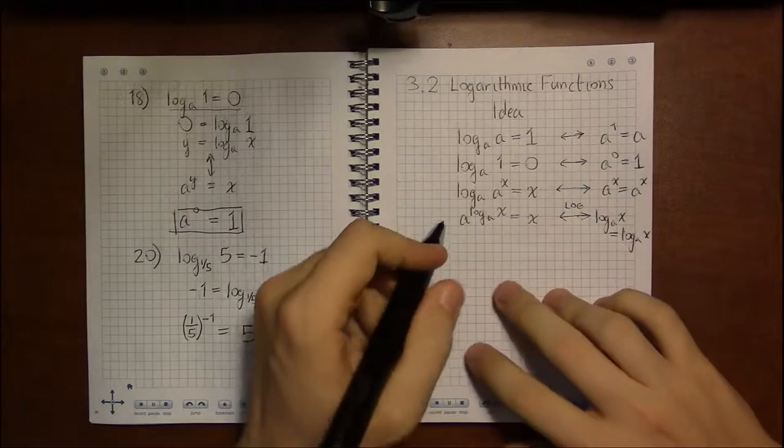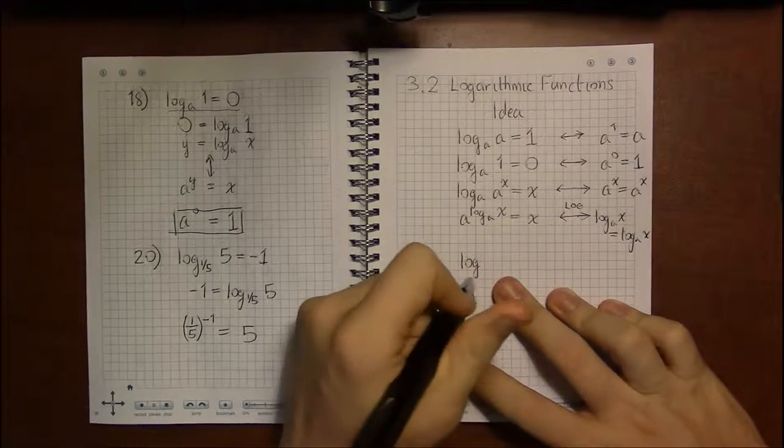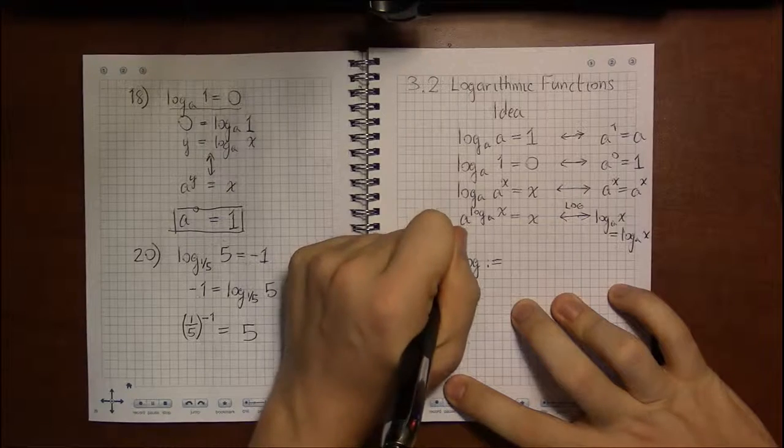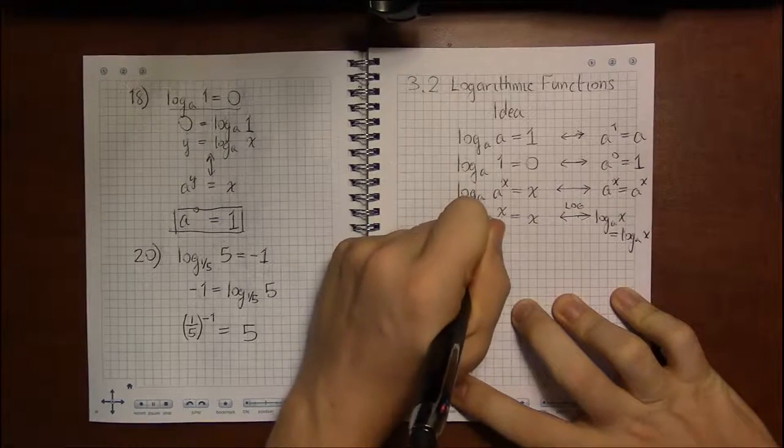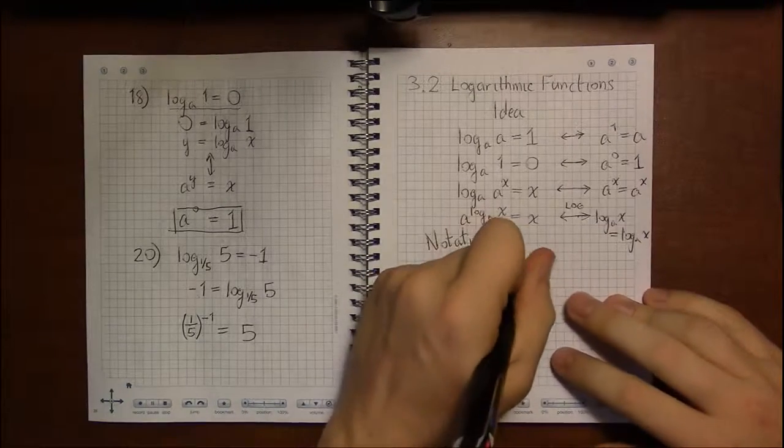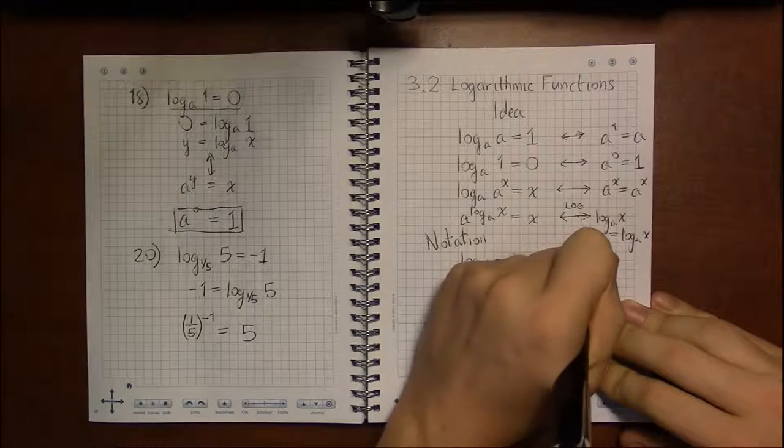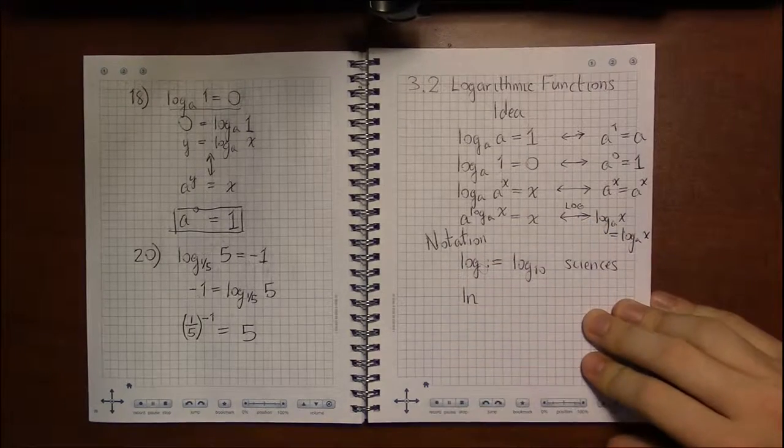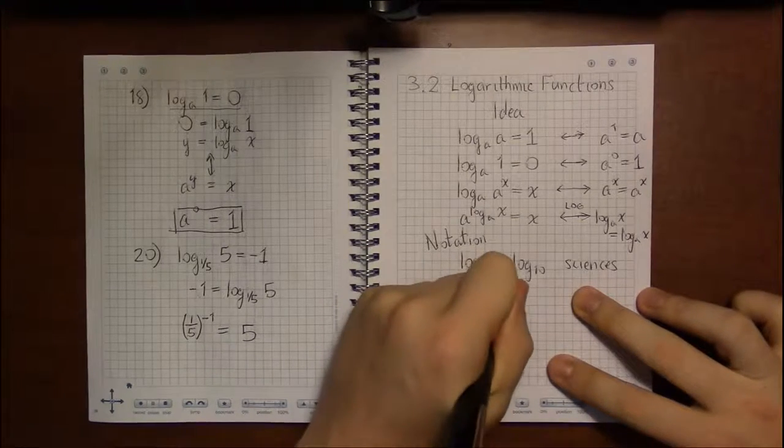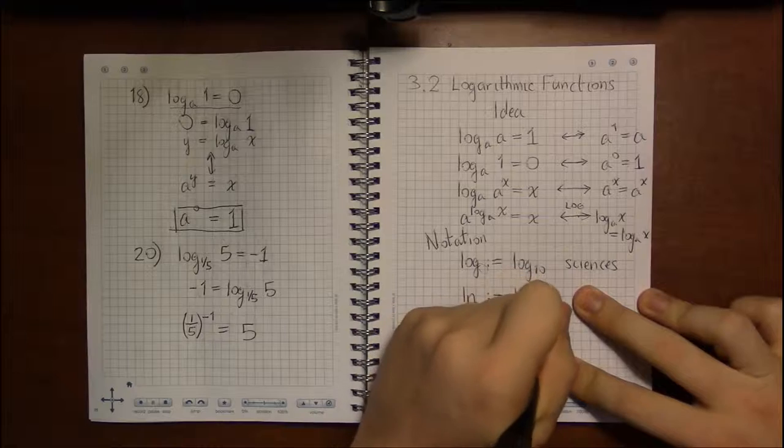Now, logs are common enough and utilized enough that we as human beings get rather lazy with logs. And the notation that ends up being rather common is that if you write LOG with no base at all, this is assumed to be log base 10. You see these a lot in the sciences, in physics and chemistry and biology and so forth and so on. Ln, you'll see a lot in math classes. This is log base e.